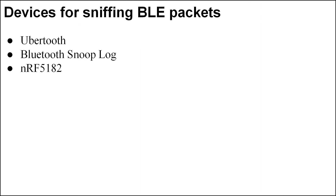Let's discuss the devices for sniffing BLE packets. The most common devices nowadays a security researcher is using are Ubertooth and the nRF51822 called a BLE sniffer. There is also one technique using an Android phone where we can capture the incoming and outgoing traffic between the device and mobile phone. Now we will discuss the functionality of each device and technique in detail.